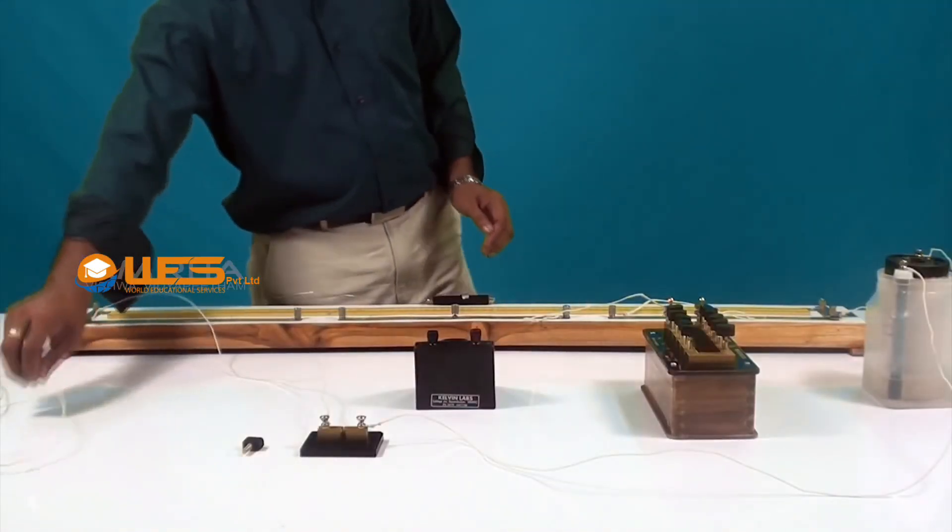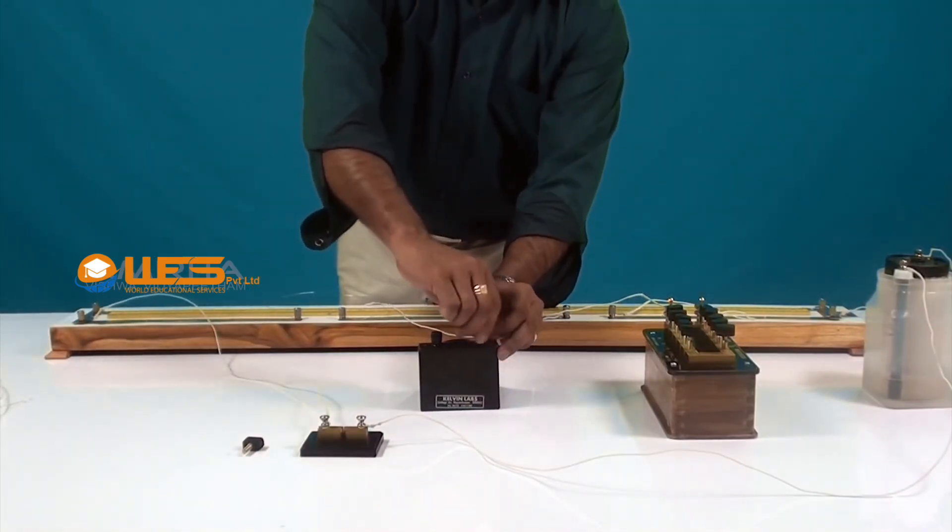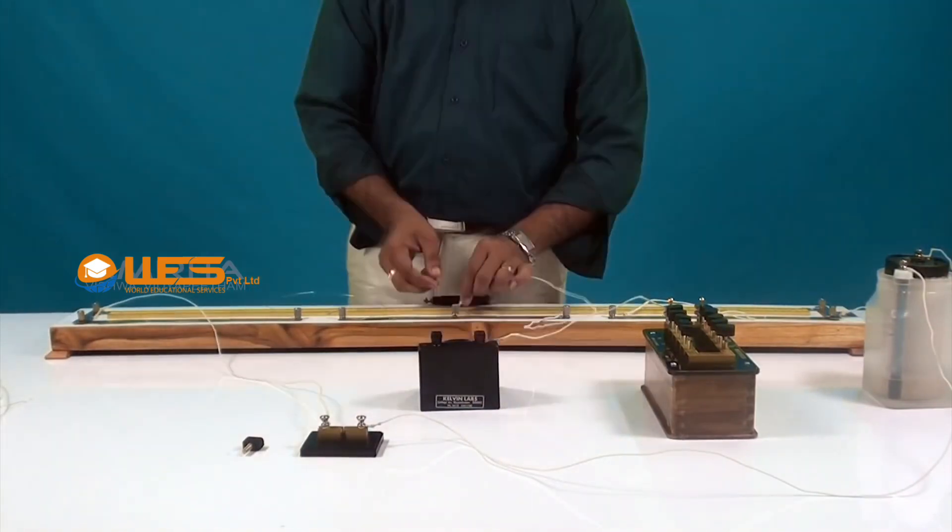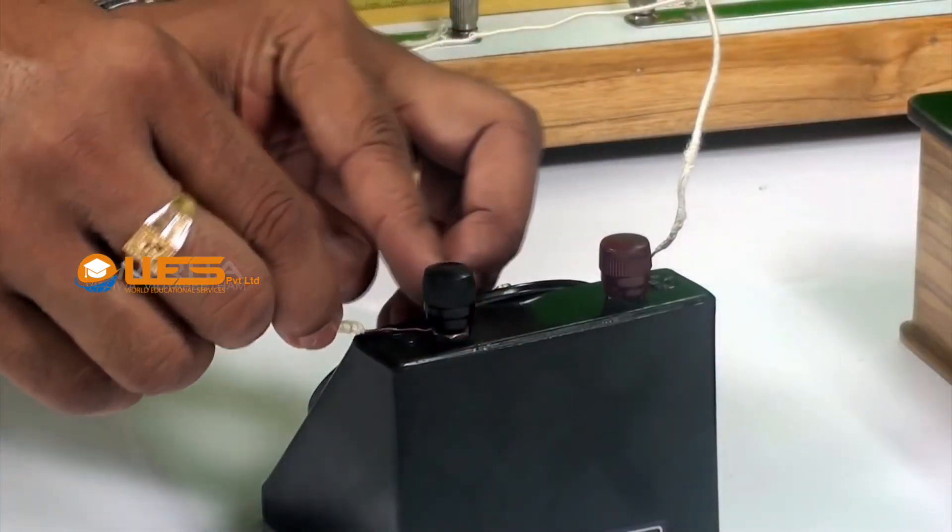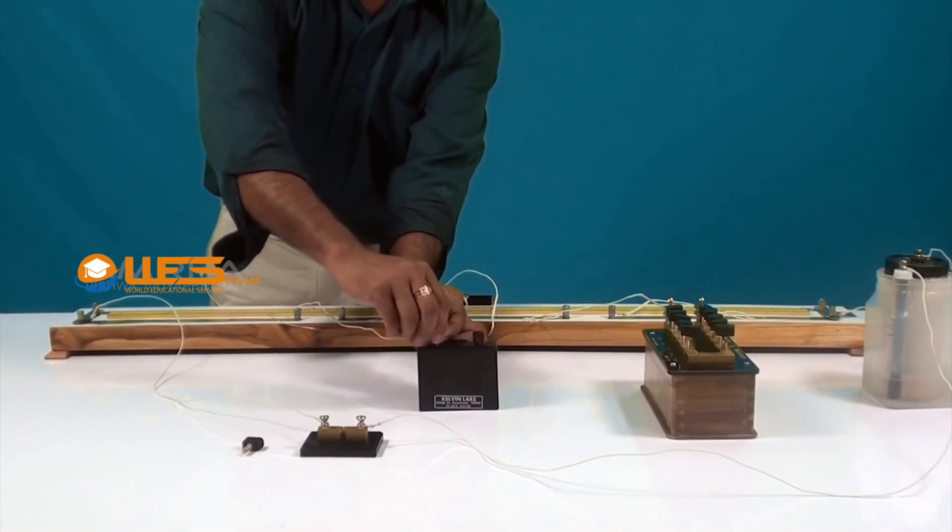With other connecting wires, connect the positive terminal of the galvanometer to the central terminal of the meter bridge and the negative terminal of the galvanometer to the jaw key.